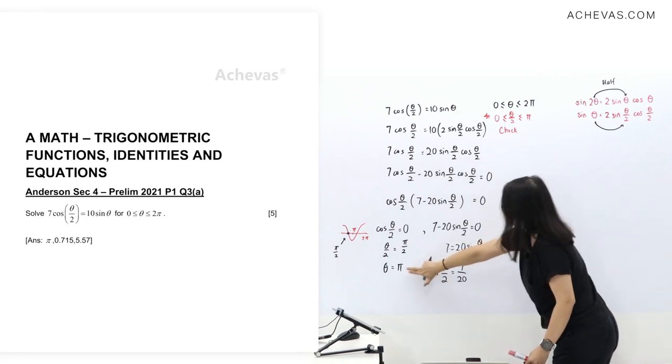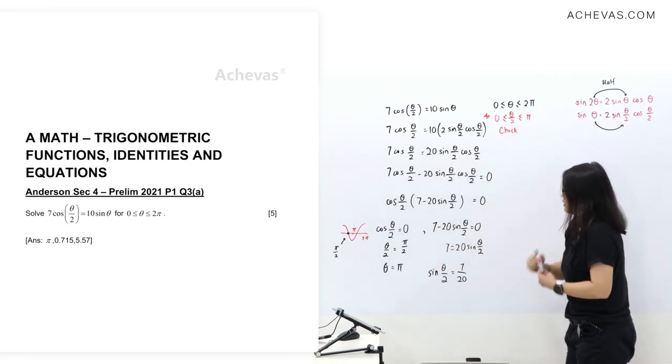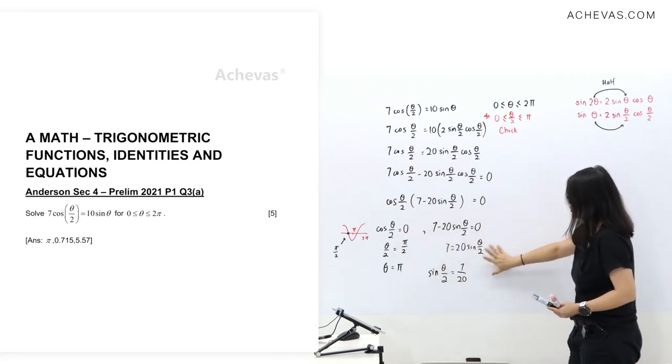So next step, theta must be equals to pi. Now, looks. This one is still in the range according to this one. So now we have solved this first solution here. Let's take a look at this one.